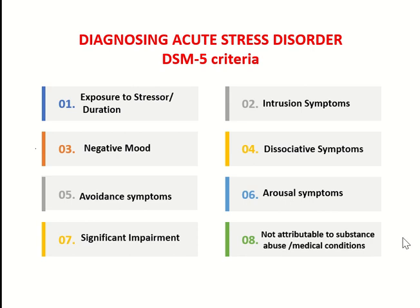Negative mood symptoms include a persistent inability to experience positive emotions. Dissociative symptoms may present as the person being in a daze, with an altered sense of reality of one's surroundings or oneself. Avoidance symptoms include efforts to avoid distressing memories and external reminders such as people, places, or conversations closely associated with the traumatic event. Arousal symptoms include sleep disturbances such as difficulty falling or staying asleep, irritable behavior and angry outbursts with little provocation, hypervigilance, problems with concentration, and increased startle response.